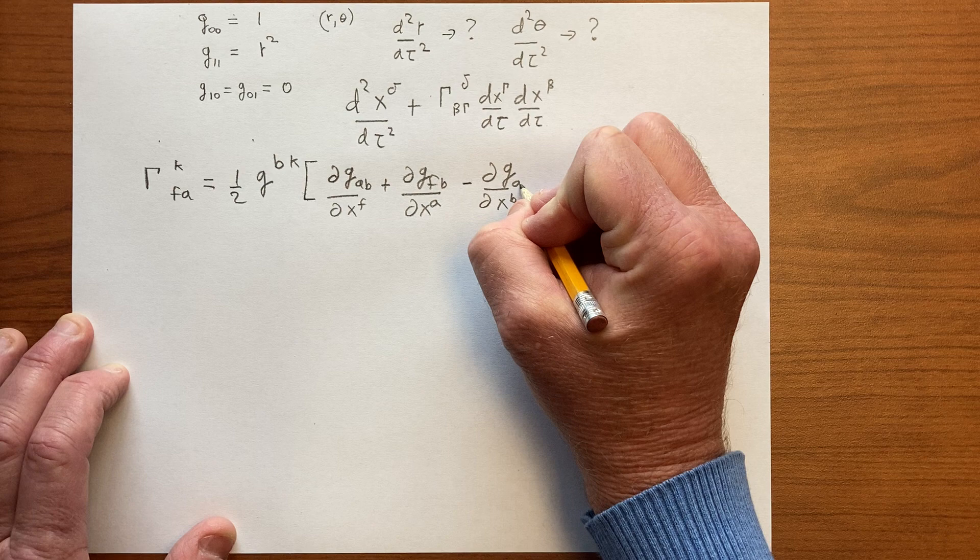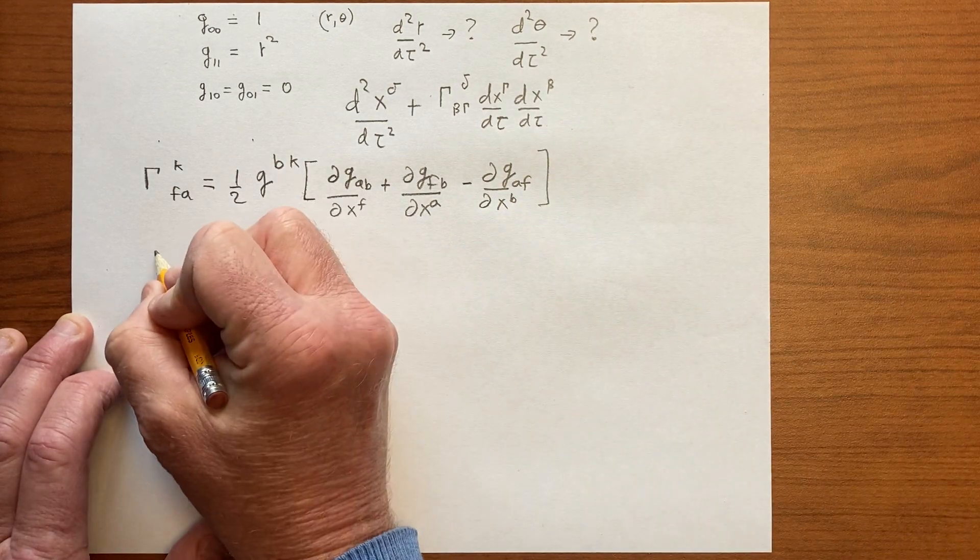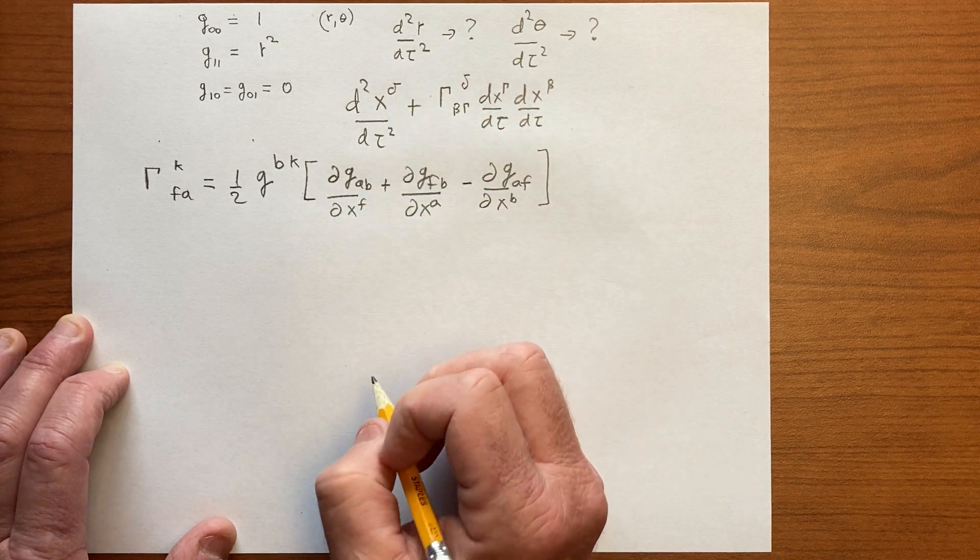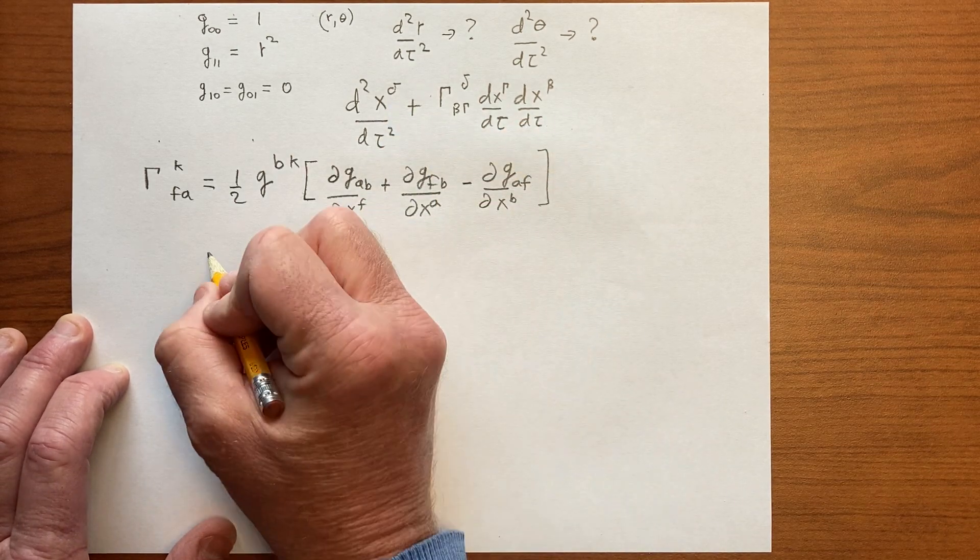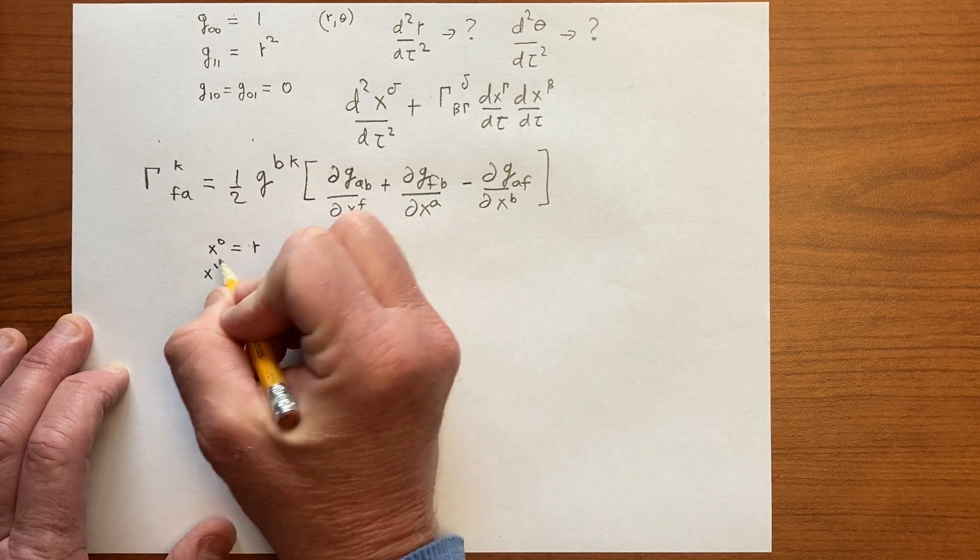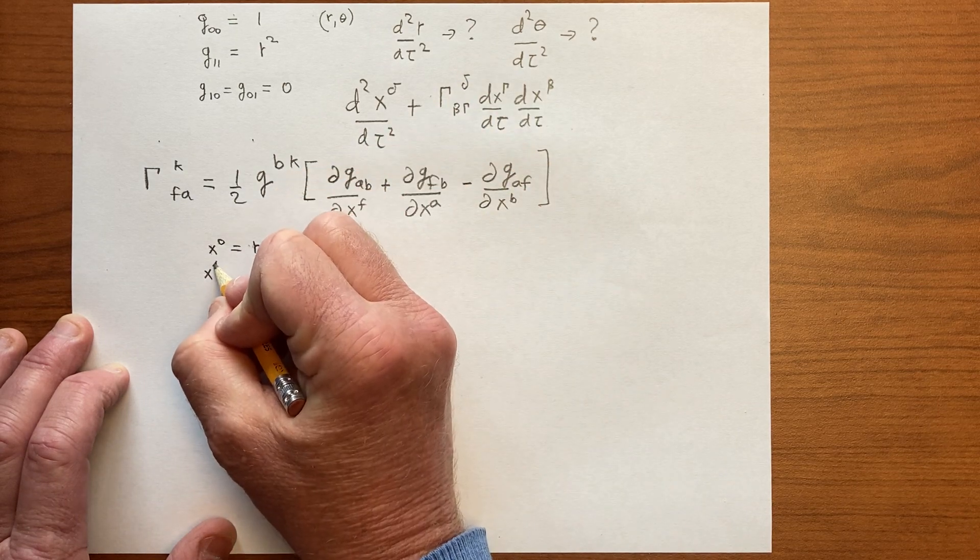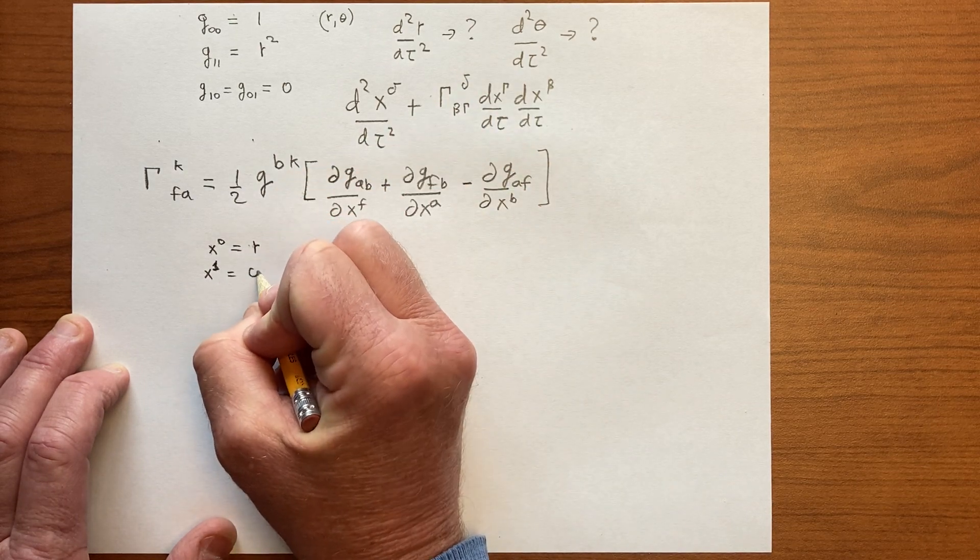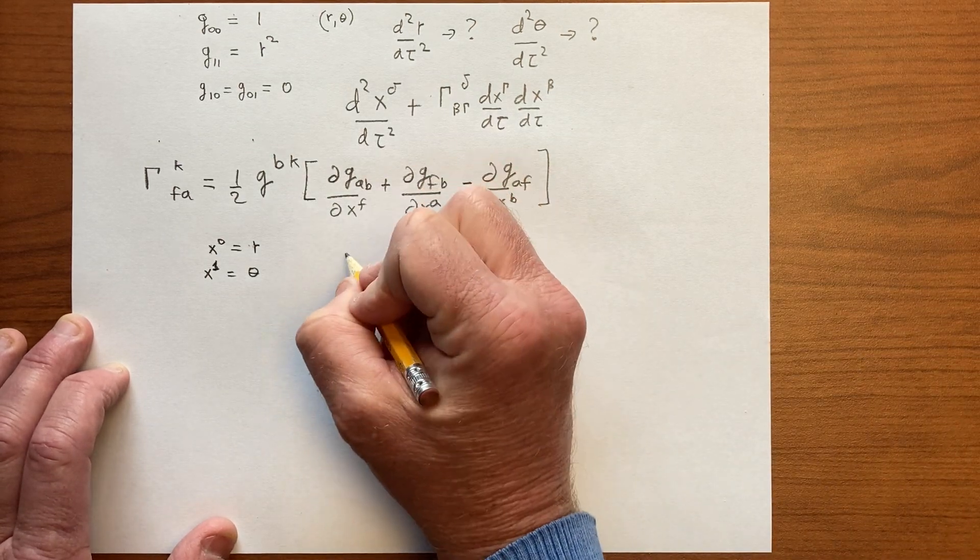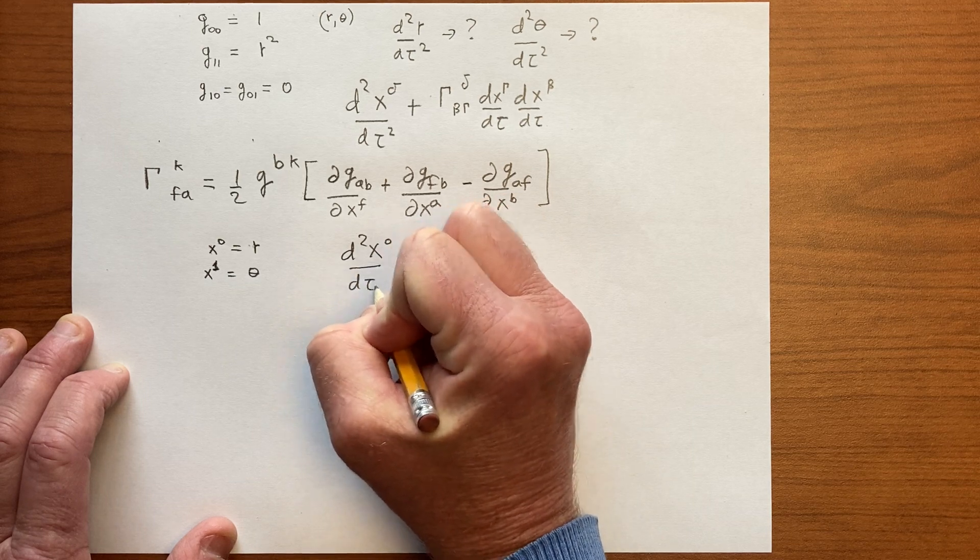This is geodesic. Okay, so we're choosing delta equals 0. So we have x^0, which is r, and x^1 is equal to theta. And so we're evaluating d²x^0/dτ².